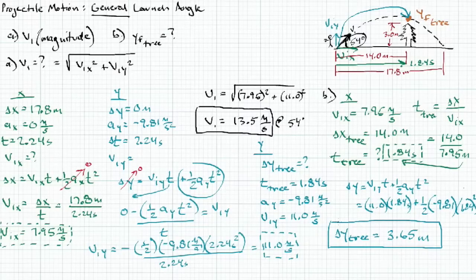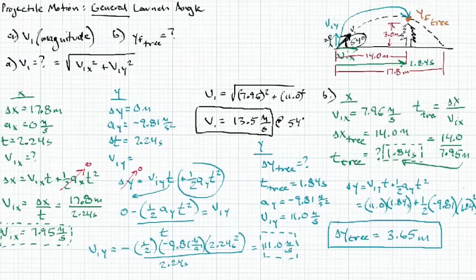That's a good example of general launch angle projectile motion problems. If you want to know where something is in the y-direction but have information for the x-direction, that's fine — time is the link between x and y. I hope that helps. If you have any questions, come see me in class. Thanks for watching.